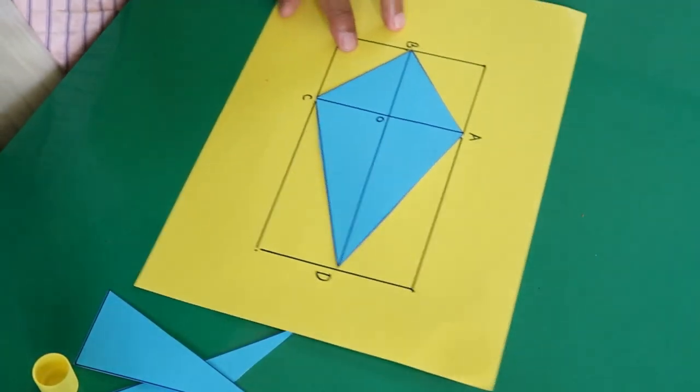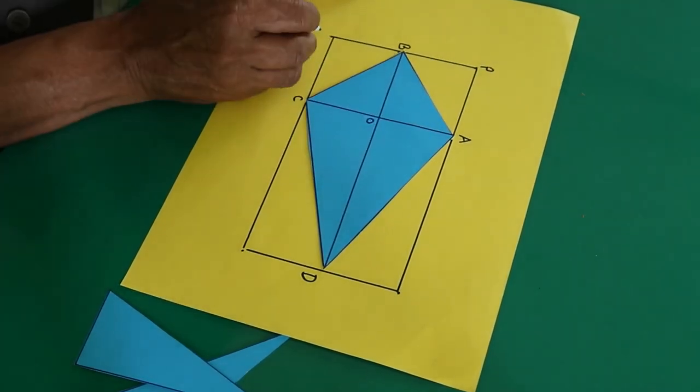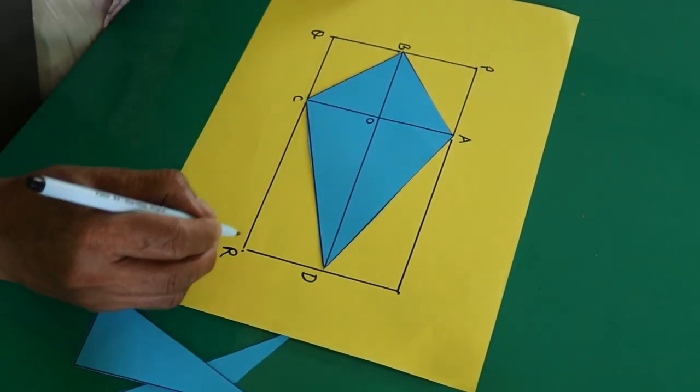This is your rectangle PQRS. We write P here, Q here, R here and S.